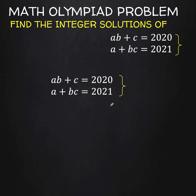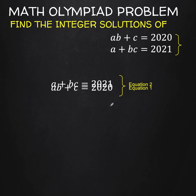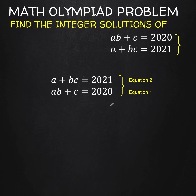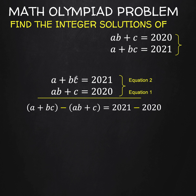The first thing we're going to do is call the first equation as equation 1 and the second as equation 2. Let's reverse the order of the two and perform subtraction. So subtract the quantity A plus BC minus the quantity AB plus C. That is equal to the difference between 2021 and 2020.